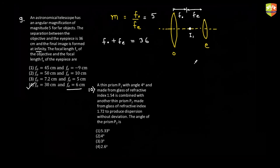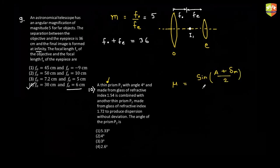For question ten, it talks about deviation from a thin prism. We know that refractive index μ = sin((A + δM)/2) / sin(A/2). Since the prism is thin, angle A is very small, so we can approximate sine of the angle as the angle itself, giving μ = (A + δM)/A.